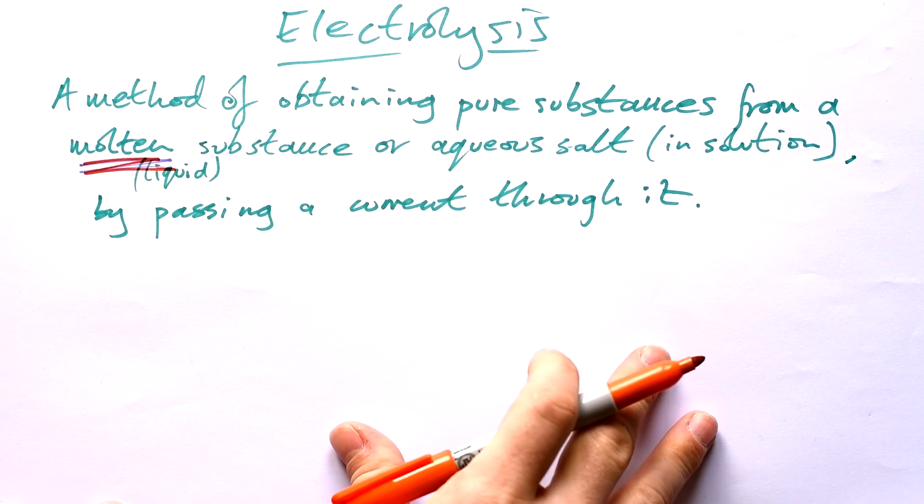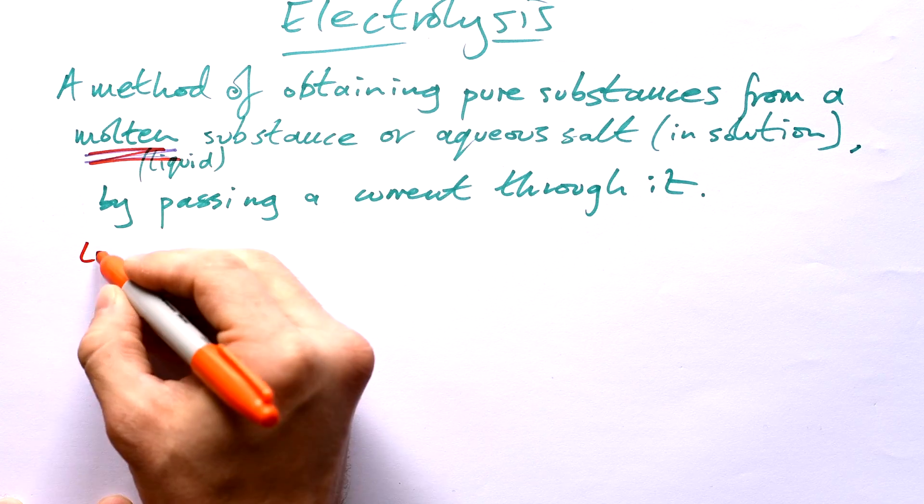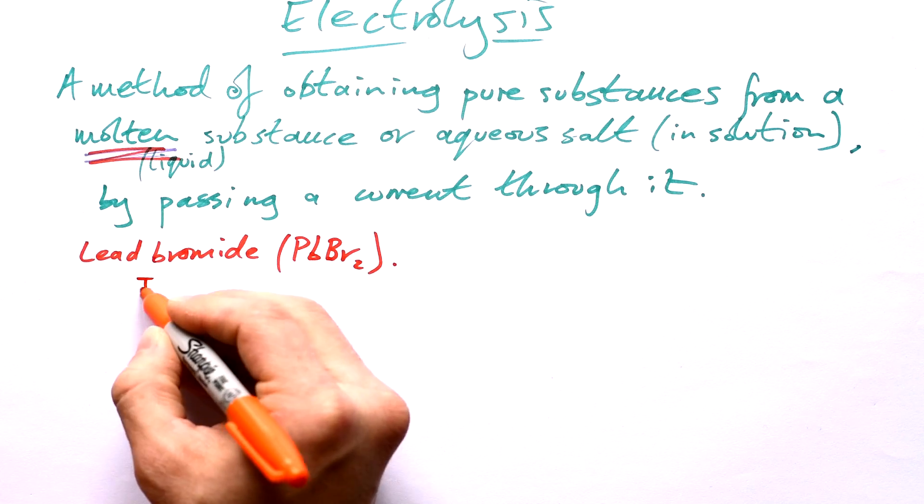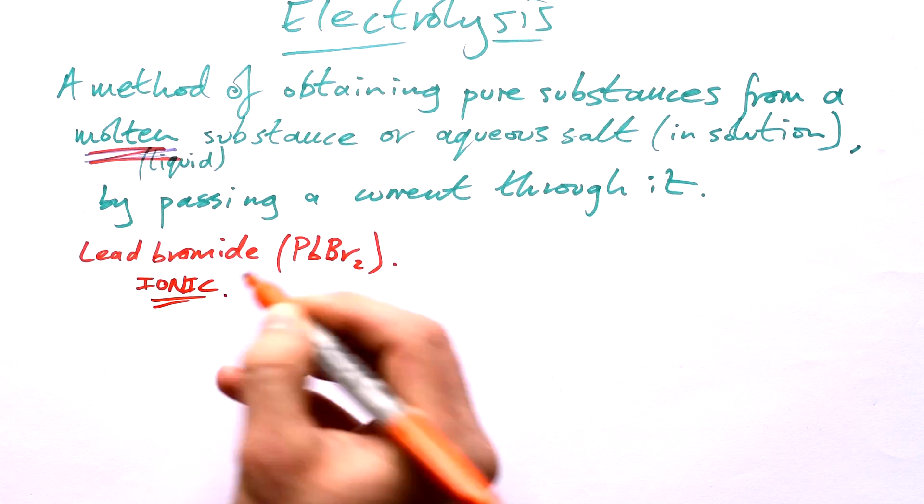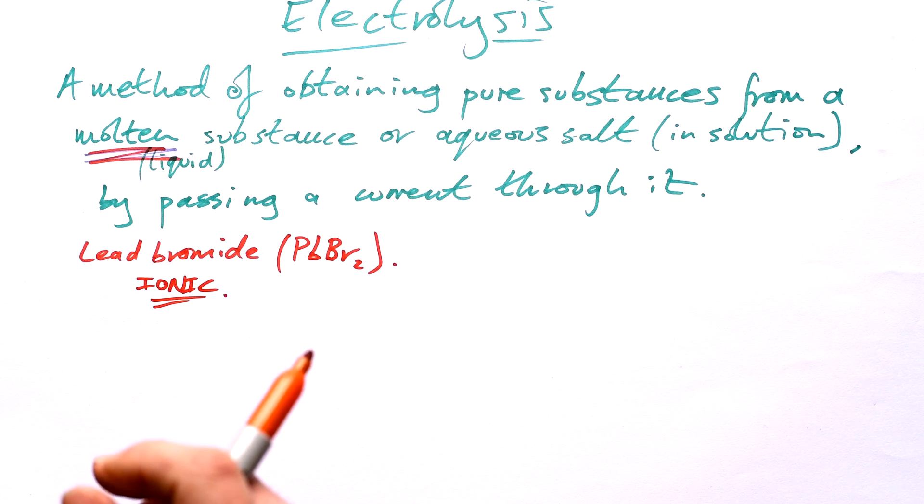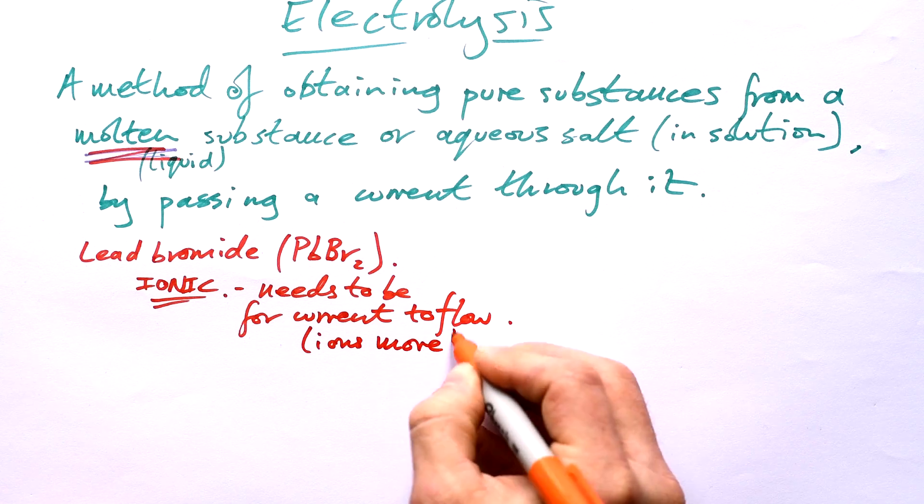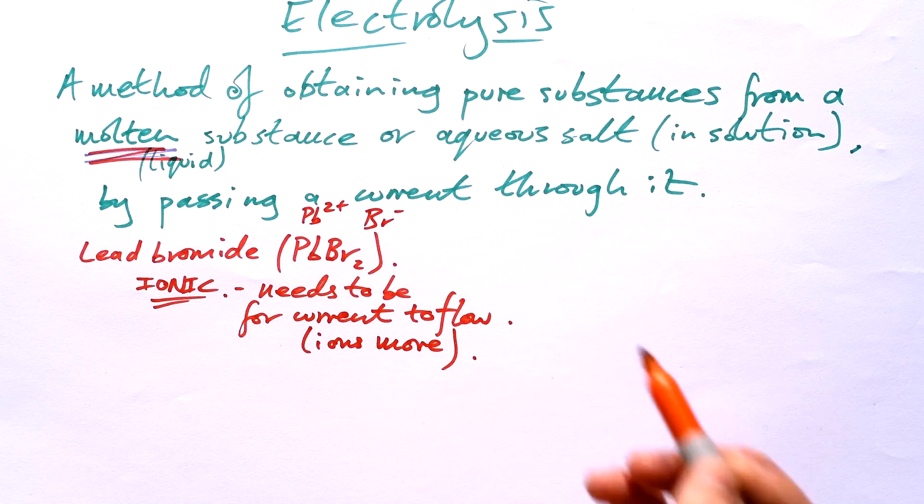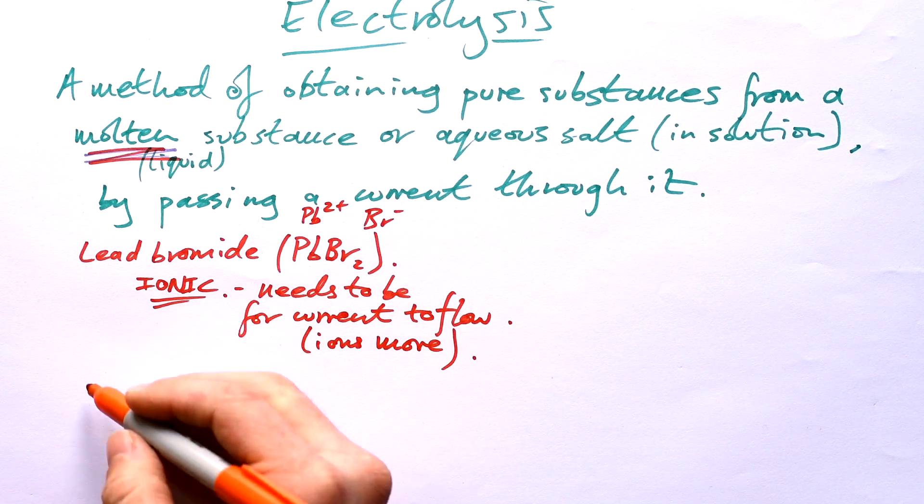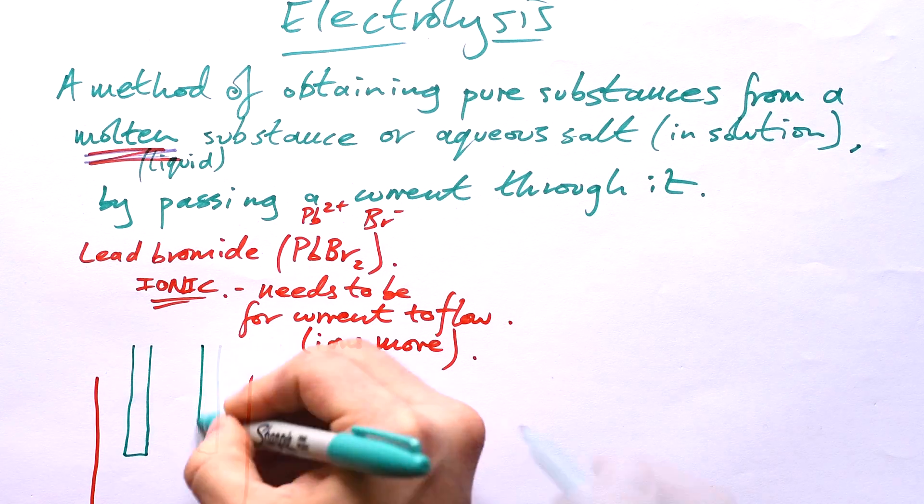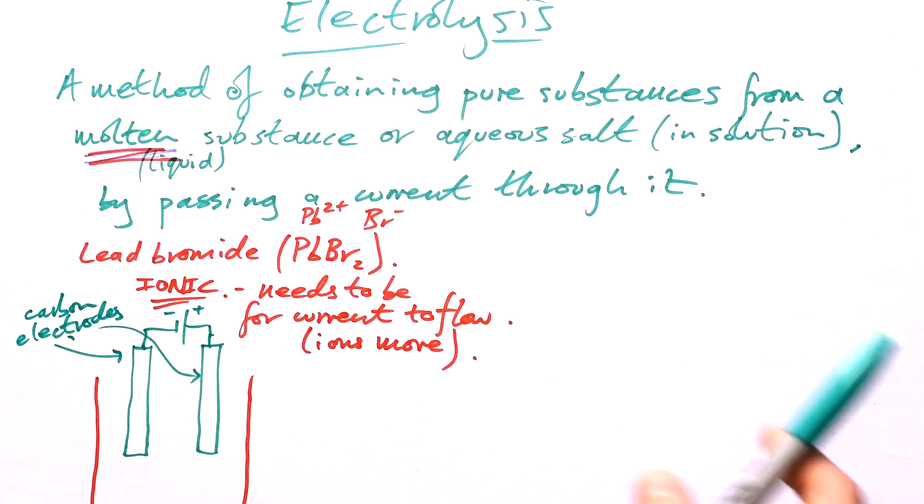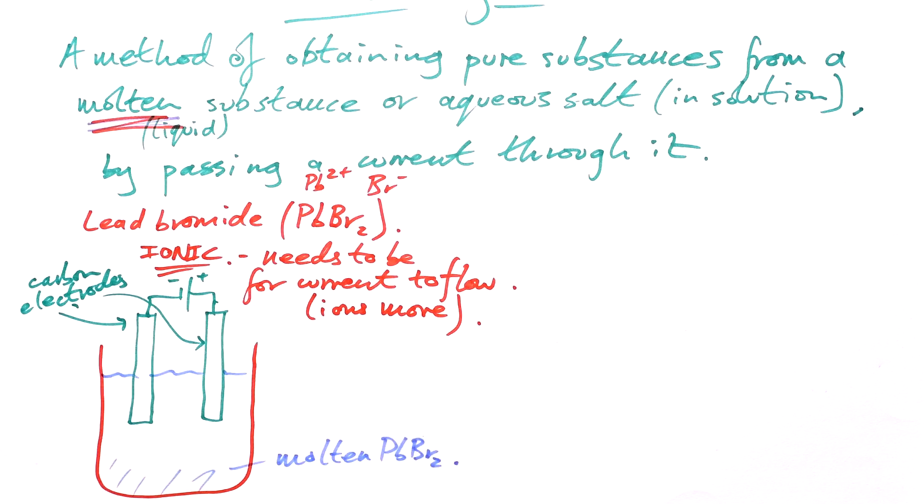So let's deal with something that's molten first, shall we? Let's take lead bromide, PbBr2. Now, what do you know about lead bromide? Well, first of all, it's ionic. It's an ionic compound, and it needs to be an ionic compound in order for current to flow, and that's because the ions move. And how do we get them to move? Well, we have two electrodes, and usually when we have electrodes, they're made out of carbon. They're just sticks of carbon that we stick in the molten mess that is our lead bromide. And again, it has to be molten because otherwise the ions can't move.